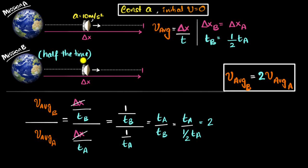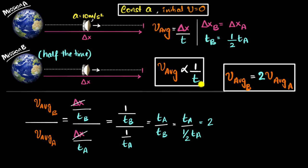To cover the same delta X in half the time, we need twice the average velocity — which is not super obvious for accelerated motion. But could we have figured this out without doing the math? Yes. Since delta X is the same for both, average velocity is proportional to 1 over T — inversely proportional to T. So if T becomes half, the average velocity is the reciprocal of one-half, which is 2. Just by looking at the model, we could immediately say: if T becomes half, the average velocity doubles. Powerful!